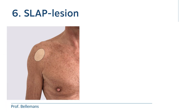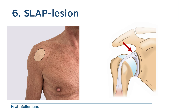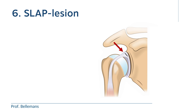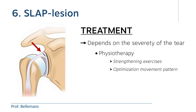Number six: SLAP lesion. With a SLAP lesion, the pain is located deep in the shoulder and is provoked by vigorous shoulder movement, like when throwing or smashing a ball. It is caused by a tear at the anchorage site of the bicep tendon. Treatment depends on the severity of the tear. Sometimes physiotherapy with strengthening exercises and optimization of the movement pattern may suffice, but in more severe cases, surgery may be needed.